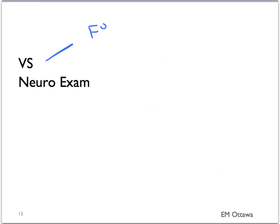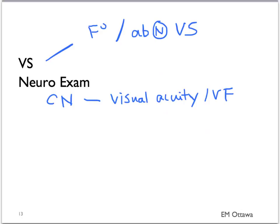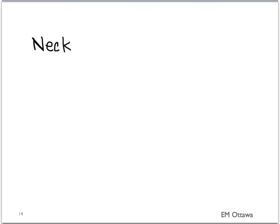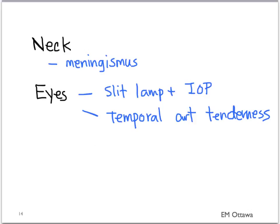For the physical exam, for vital signs we need to check for fever and any other abnormal vital signs. We also need to do a detailed neurological exam including cranial nerves, paying special attention to vision in terms of visual acuity and visual fields. We need to check motor and sensory for both upper and lower extremities, and cerebellar testing including gait and dysmetria. Going down the neck, we want to check for signs of meningeal irritation. For the eyes, if worried about glaucoma, a slit lamp exam and measurement of intraocular pressure should be obtained. We also want to palpate the temporal artery to see if it's tender.